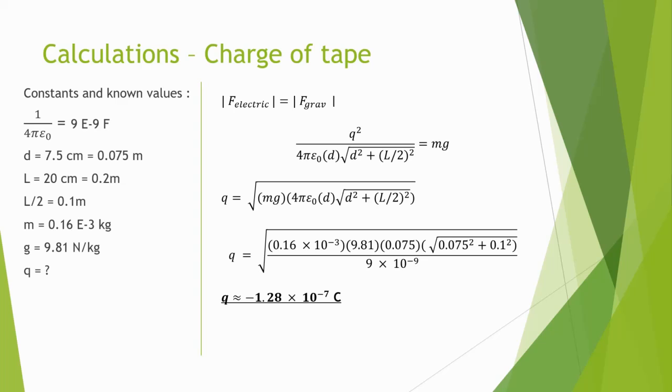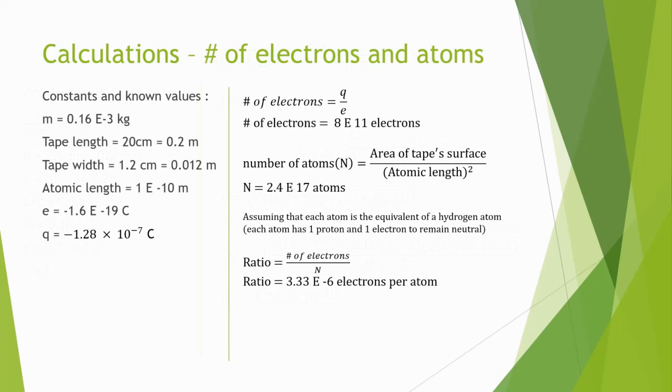Then, by finding the ratio of the charge found earlier to the charge of an electron, the experimenter calculated there was an excess of 8 times 10 to the 11 electrons on the U-tape, and by dividing the number of electrons by the number of atoms on the surface of a U-tape, the experimenter found that the ratio of electrons to atoms was 3.33 times 10 to negative 6 electrons per atom.